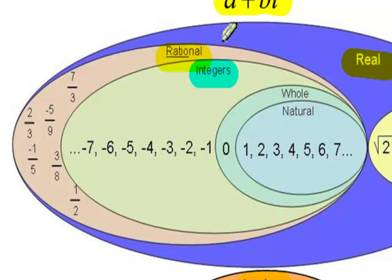Within integers, we have whole numbers, and whole numbers are a subset that include positive integers and the number 0. 0 is neither positive or negative.